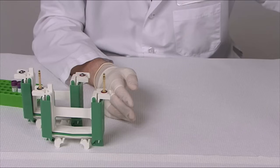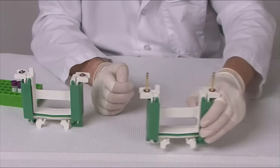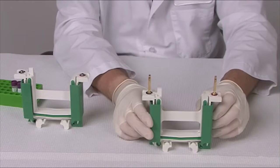To begin assembling the TGX gels in the MiniProtein TetraCell, prepare the electrode assembly module by opening up the wing clamps on either side.